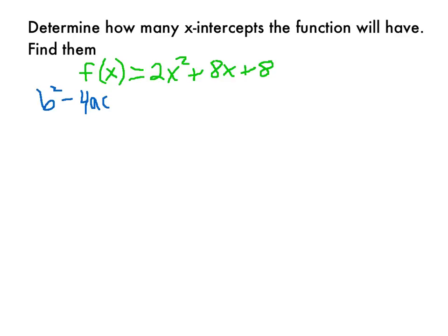Now that we know the discriminant tells us how many x-intercepts a quadratic function will have, we want to use it to answer some questions. This question says to determine how many x-intercepts the function will have and then find them. We write down the discriminant, which is b squared minus 4ac. We see that a is equal to 2, b is equal to 8, and c is equal to 8.